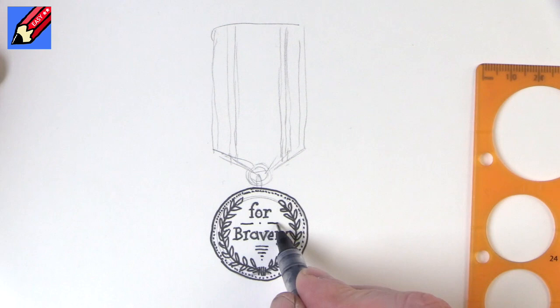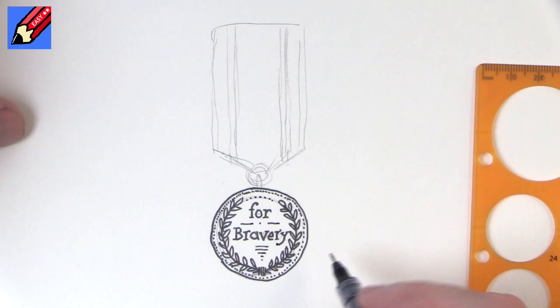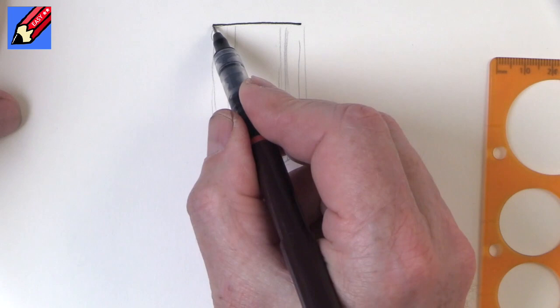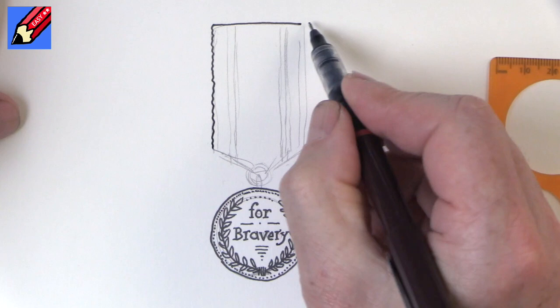And then we can start at the top of the ribbon. And the ribbon has a slightly kind of wobbly line down the side, so if we do those two.